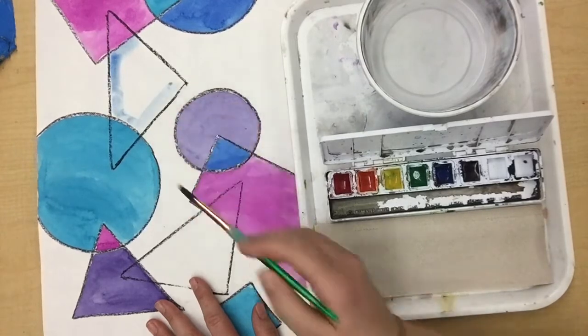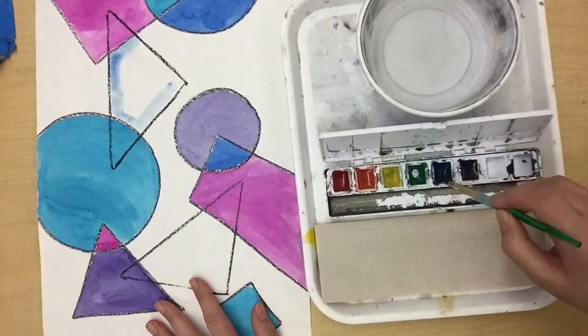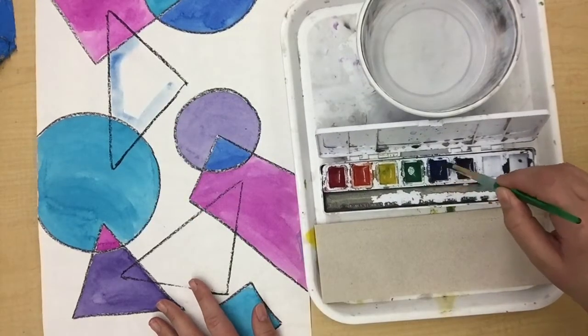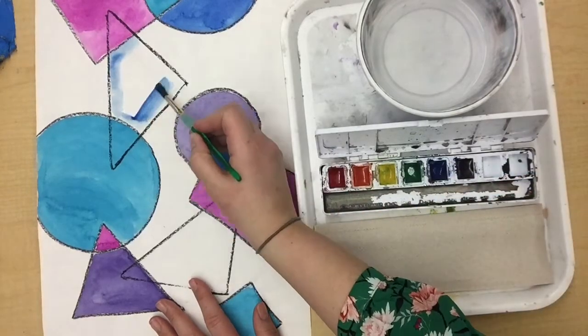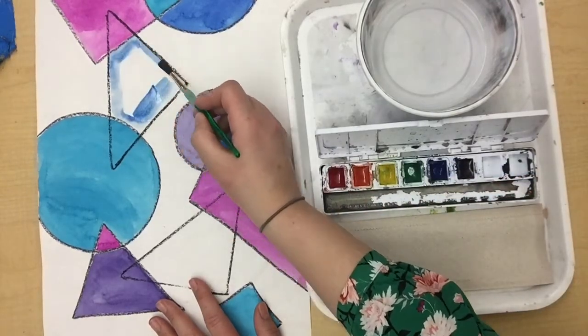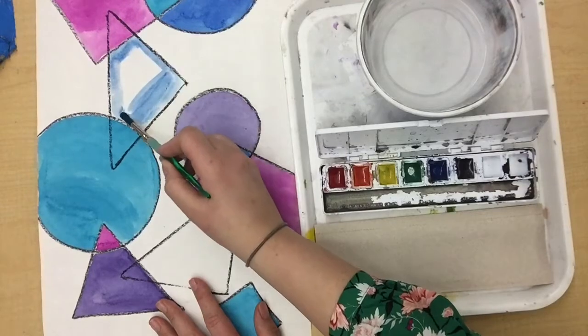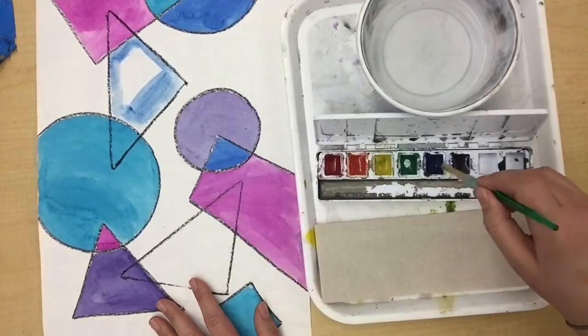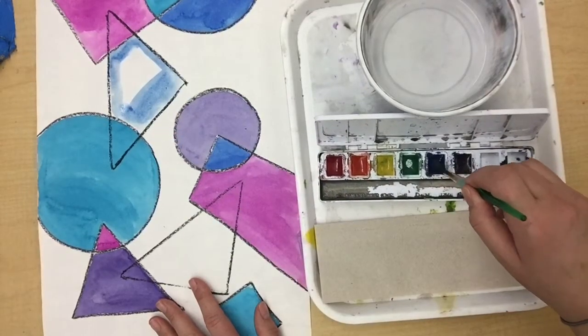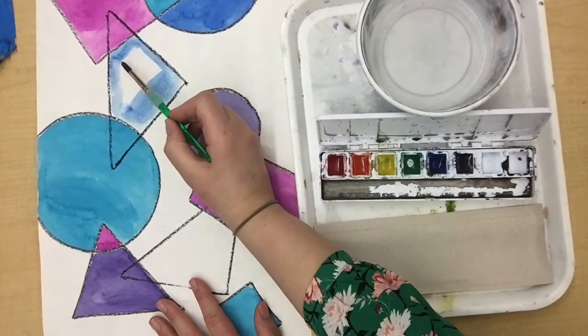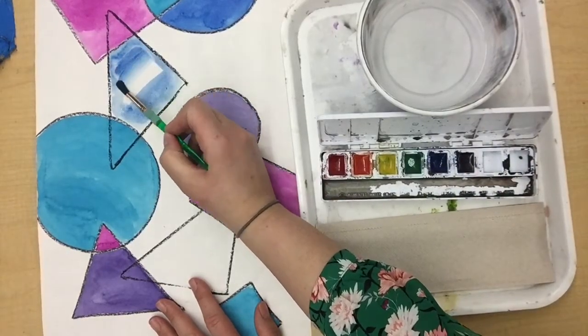Notice how it's kind of light, so that means I need more paint on my brush and I can go right back over it. If you want the blue to be a little darker, add more paint and keep painting until you achieve the results you like.